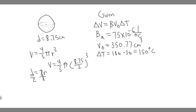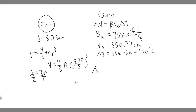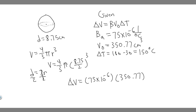Now we've got beta, we have the initial volume, and we have the change in temperature. So if we want to find the change in volume of this aluminum sphere, we just plug it in. Plugging it in, we get: change in volume equals 75 times 10 to the minus 6, multiplied by 350.77, and then times 150.